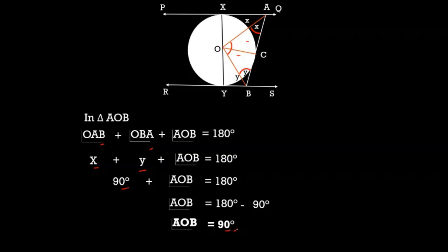Important topics in circles are definitions of terms — chord, point of contact, secant, and tangent of a circle. Theorem 4.2 is very important for the exam; chances of getting this theorem in your exam are very high. If you haven't subscribed to my channel yet, make sure you subscribe and share this video as much as you can. This will help me to make more and more videos. I hope this video will help you prepare for your exam. Thank you.